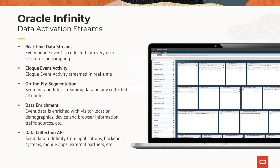Infinity streams — within the tool, we can capture any online activity event that happens. It's raw data with no sampling: every click, every view, scroll information, hovering, video clicks, how far into a video, and the content you're consuming — all coming in real-time, unsampled. On the fly, that data is enriched automatically. Infinity appends visitor location, device and browser information, referral data, and demographic data in real-time as those signals come in. We can then filter that data and apply query logic to focus on what we're interested in.